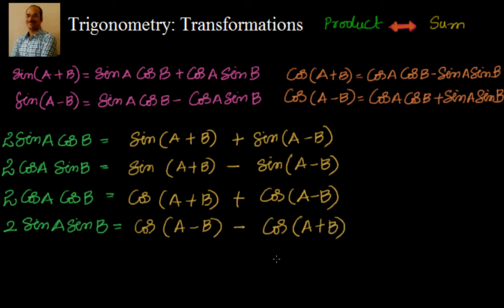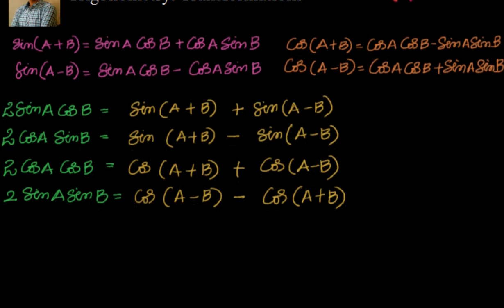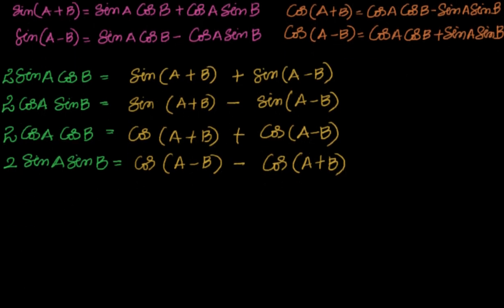These are the product-to-sum transformations. If you see 2 sinA cosB, you can write it as sin(A+B) plus sin(A-B). Remember that these formulas are very important in trigonometry. If you know these formulas, you can get any other formula back, because all the multiple and sub-multiple angle results started from these compound angle formulas. Now this was product to sum — how do we get sum to product?